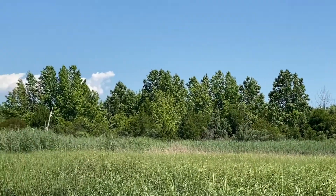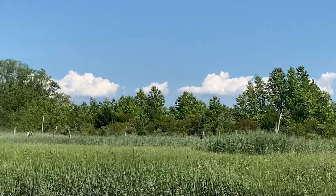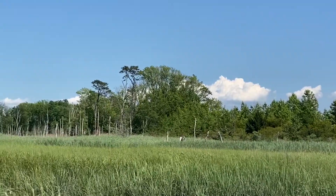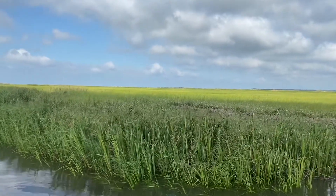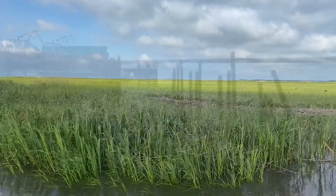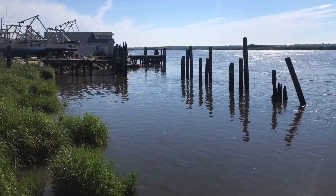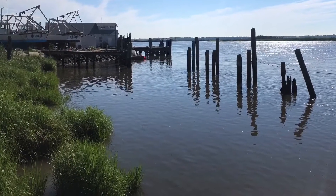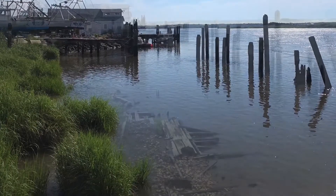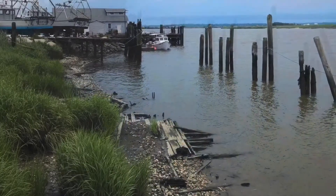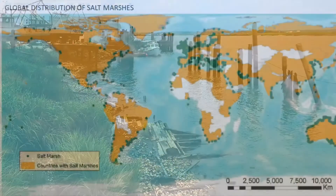Tidal salt marshes are wetland ecosystems that develop between uplands such as forests or urban areas and the low-energy intertidal zones of the lower estuary or sheltered marine coastline. The salt marsh intertidal zone is the land area covered by saltwater at high tide and exposed to the air at low tide. This tidal cycle happens twice each day.